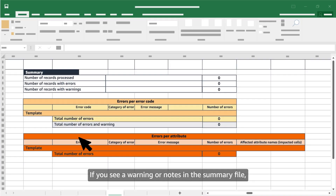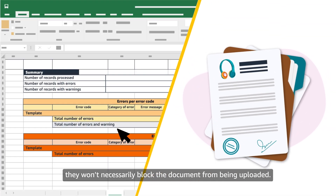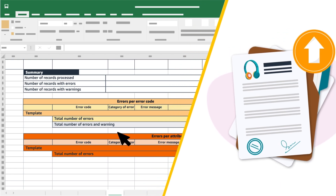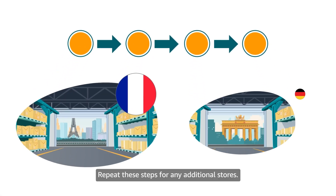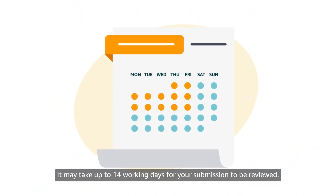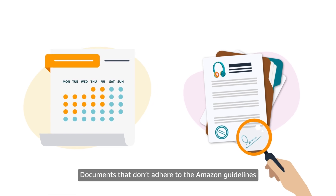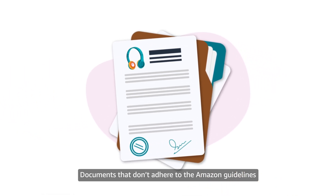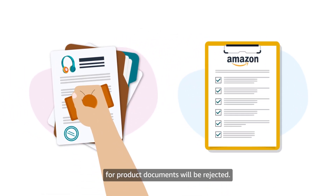If you see warnings or notes in the summary file, they won't necessarily block the document from being uploaded. Repeat these steps for any additional stores. It may take up to 14 working days for your submission to be reviewed. Documents that don't adhere to the Amazon guidelines for product documents will be rejected.